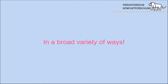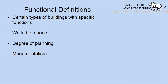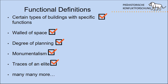If we talk about urbanity, we can define it in a broad variety of ways. The classical way is through functional definitions: certain types of buildings with specific functions, use of space, a degree of planning, monumentalism often attributed to the walls, and traces of an elite. Papers on this are always very narrative — depending on the author, traces of elite might be warrior burials or the wall itself. There's not much quantification; it's more like checklist archaeology where you take your site, fill the checklist, and somehow it becomes urban.